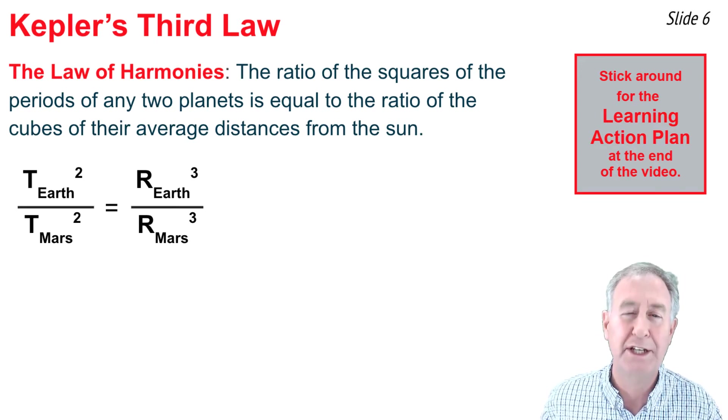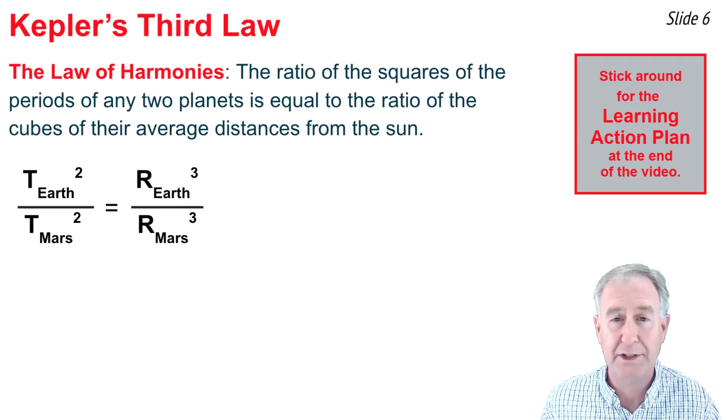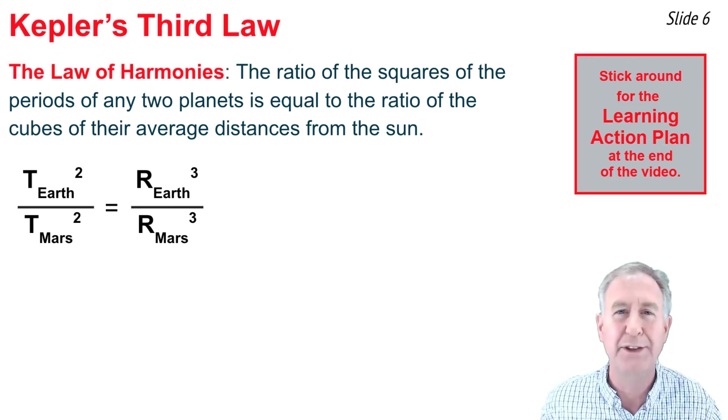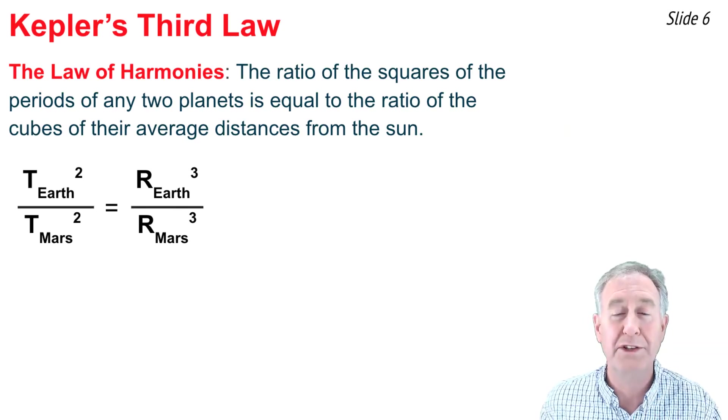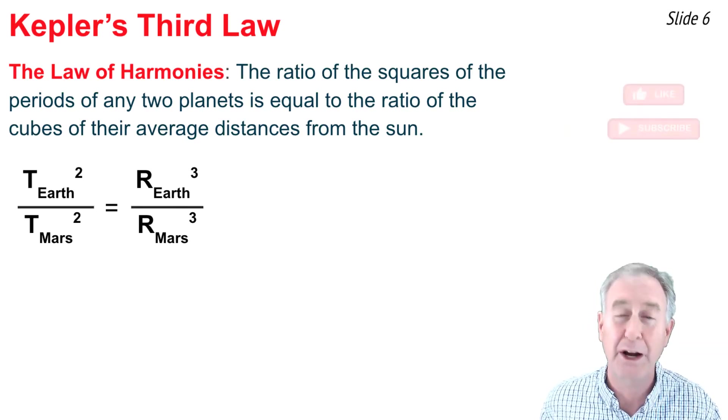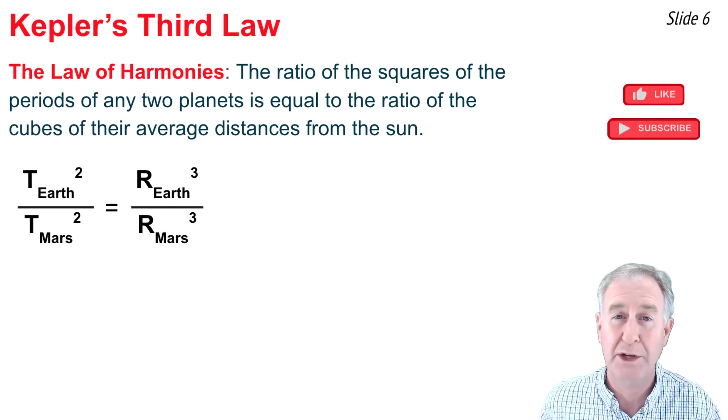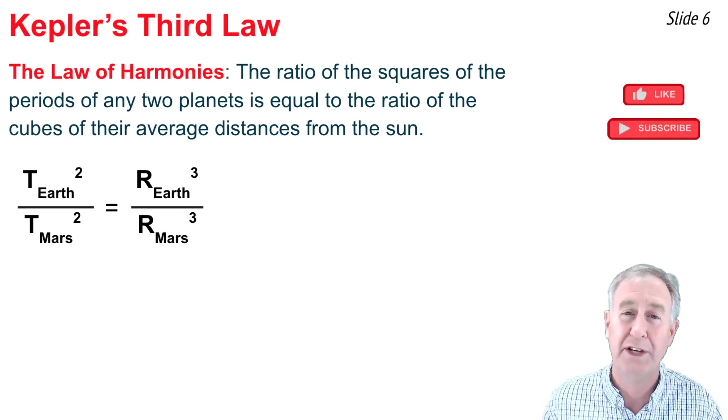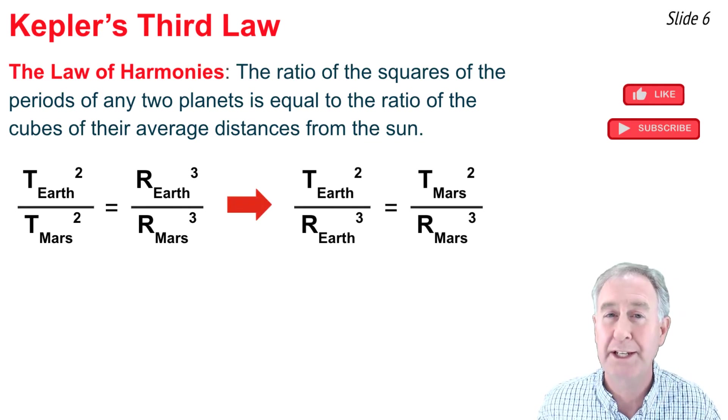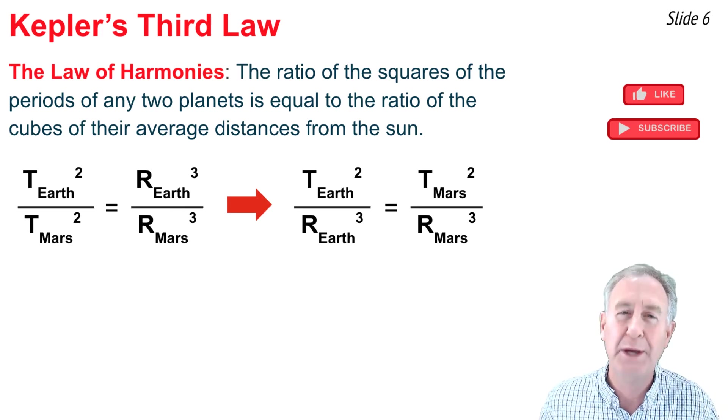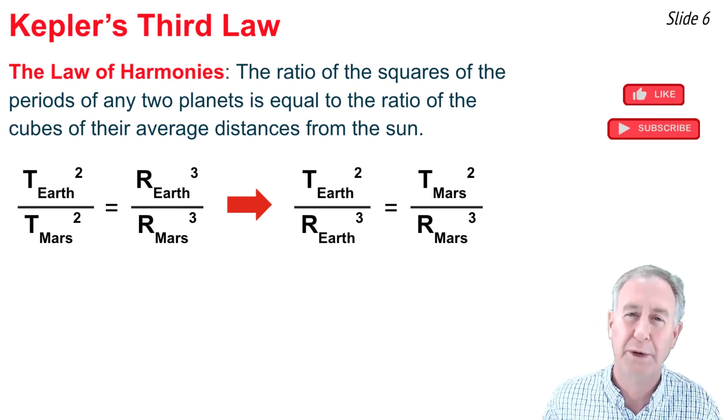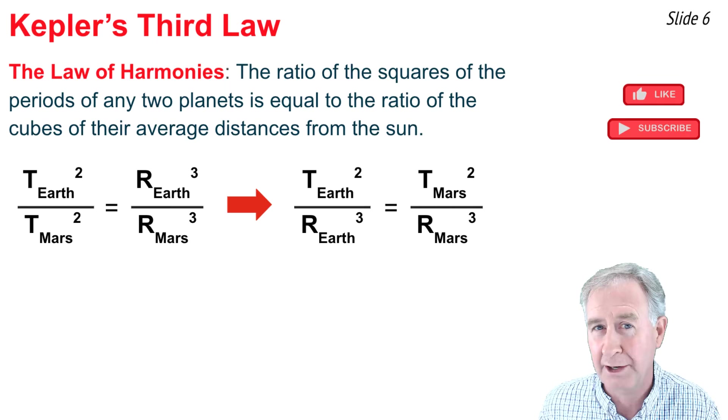Now, when we say radius here, we mean the average radius or average distance of the planet to the sun. Now, I'm going to take this equation and rearrange it so that the two Earth variables are by themselves on one side of the equation and the two Mars variables on the other side, and the rearrangement would end up looking like this, and we would state that as the ratio of the period squared to radius cubed for Earth is equal to the ratio of the period squared to radius cubed for Mars.